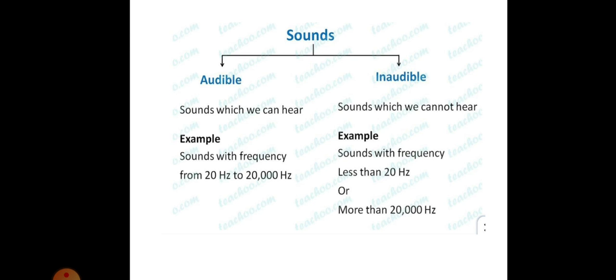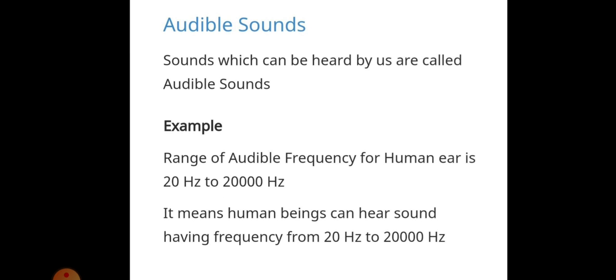The sound of frequency less than 20 hertz and more than 20,000 hertz is not audible to us. Audible sounds are sounds which can be heard by us. The range of audible frequency for the human ear is 20 hertz to 20,000 hertz. So, if the question is asked, the audible frequency of human ear is 20 hertz to 20,000 hertz.